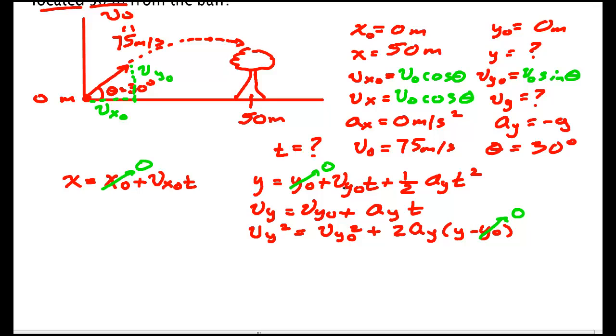I don't know Y. Do I know VY naught? No, I do not. But I can find it with V naught sine theta, so yes I do know it. Do I know T? No. Do I know one half? Yes. aY? Yes. Do I know T? No. So I don't know Y, I don't know T. Two unknowns.